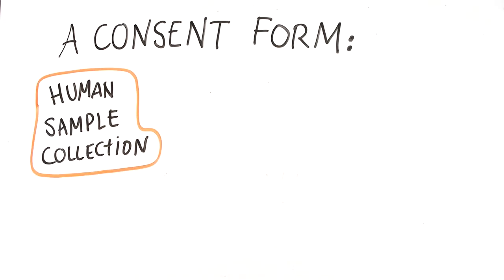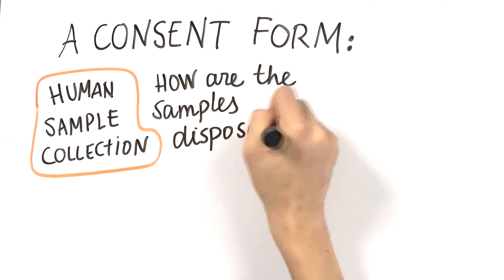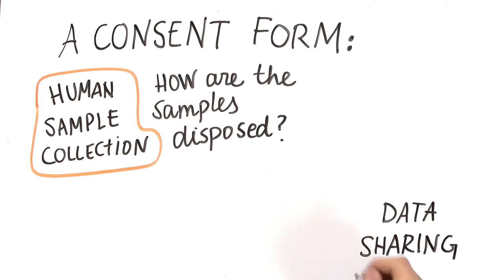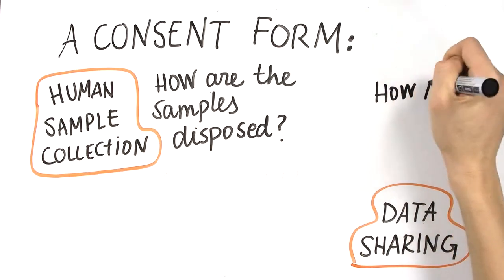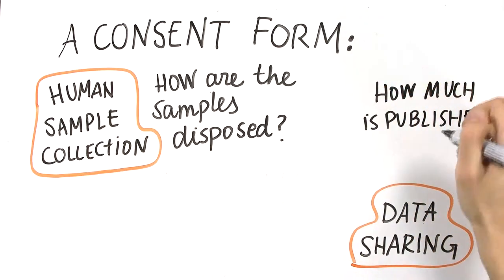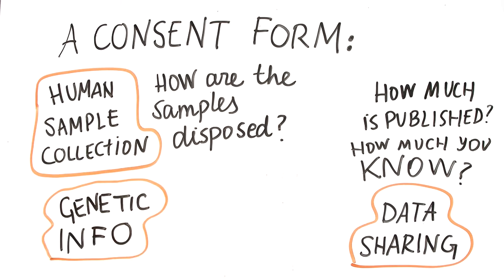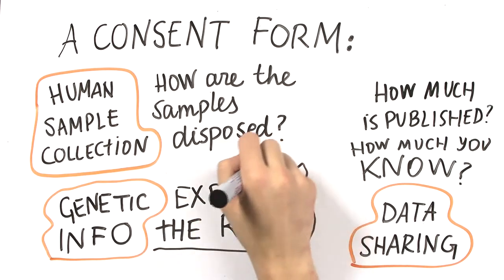For human sample collection, it is important to include how the samples would be disposed of afterwards. As for data sharing, it is important to talk about how much personal information will be released, how much information the researchers would know, and how the response is analyzed. When genetic information is published, the potential usage of the genetic information by parties unexpectedly should be included in the risks.